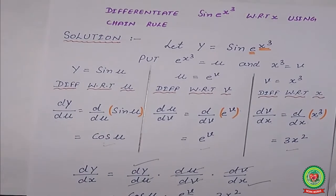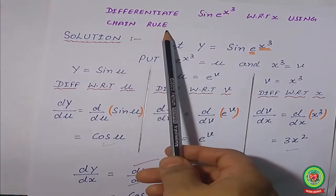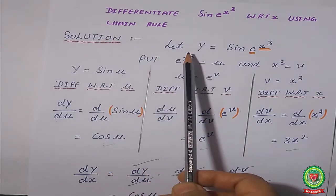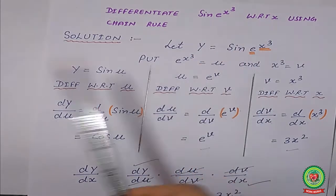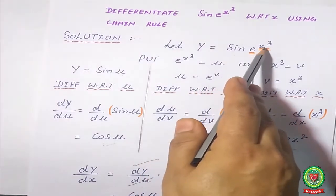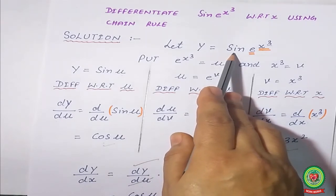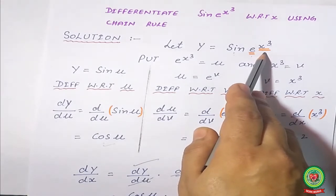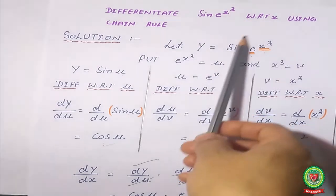Now I am taking one example that is a combination of two or three functions. Differentiate sin(e^(x³)) with respect to x using chain rule. Since chain rule is specified, we must apply the chain rule formula. According to the solution, first step: let y = sin(e^(x³)). This expression has three functions: first is sin(t), then e raised to a power, then the innermost variable x³. So, put e^(x³) = u, and x³ = v. Then y = sin(u).